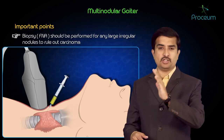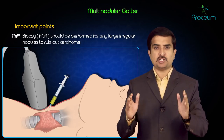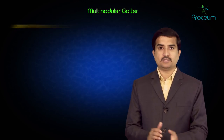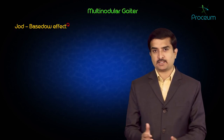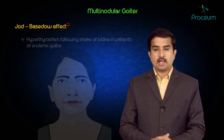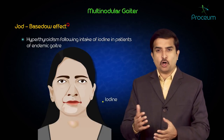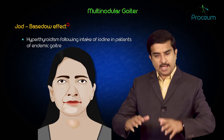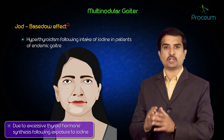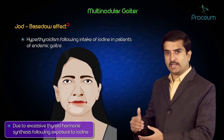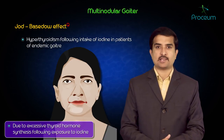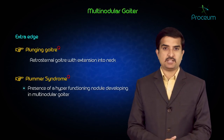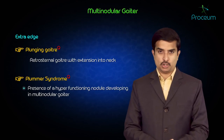The Jod-Basedow effect refers to hyperthyroidism following iodine intake in patients with endemic goiter, due to excessive thyroid hormone synthesis following exposure to iodine. With this, we have completed the topic of multinodular goiter.